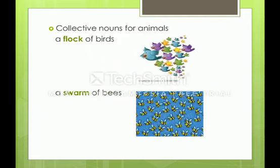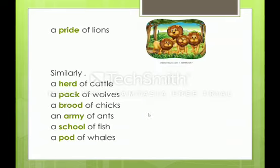Now moving to collective nouns for animals. A group of birds is called a flock — 'a flock of birds.' Flock is a collective noun for birds. In the same way, a swarm of bees, a pride of lions. We can also say herd of cattle, pack of wolves, brood of chicks, an army of ants, a school of fish, a pod of whales, and a gaggle of geese. In this way, we have many more examples.